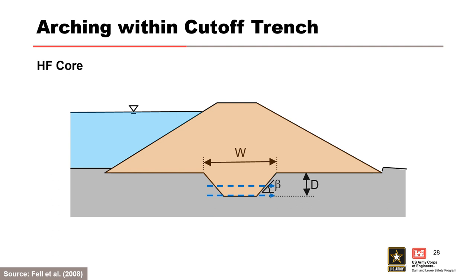For cutoff trenches, concentrated leak erosion of the core can occur at the core-foundation contact by water flowing in joints in the rock foundation. Concentrated leak erosion can also occur in a crack or hydraulic fracture across a cutoff trench. Hydraulic fracture in a cutoff trench needs to coincide with an open joint or coarse-grain soil layer downstream that provides an unfiltered exit, and hence the assessed probability should consider the likelihood of this coincidence. The hydraulic gradient used in the assessment of initiation should be based on the estimated hydraulic gradient across the cutoff trench.